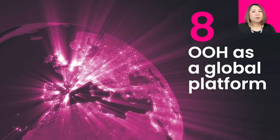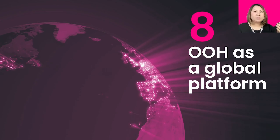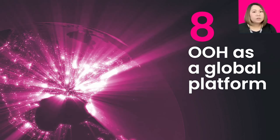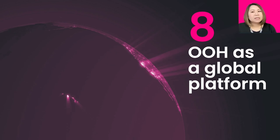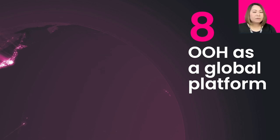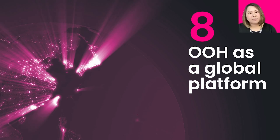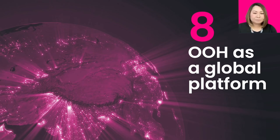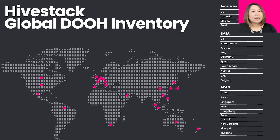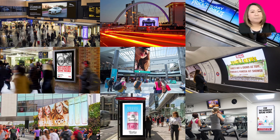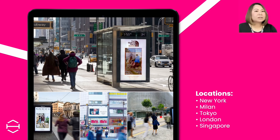With programmatic, HiveStack bridges global media owners and media agencies and advertisers together, making it very easy to activate global digital out-of-home campaigns. For example, if you're launching a campaign in Asia-Pacific, the US, or other countries, we have the inventory and platform. Last year, we activated a Gucci crossover runway phase campaign across New York, Milan, Tokyo, London, and Singapore.